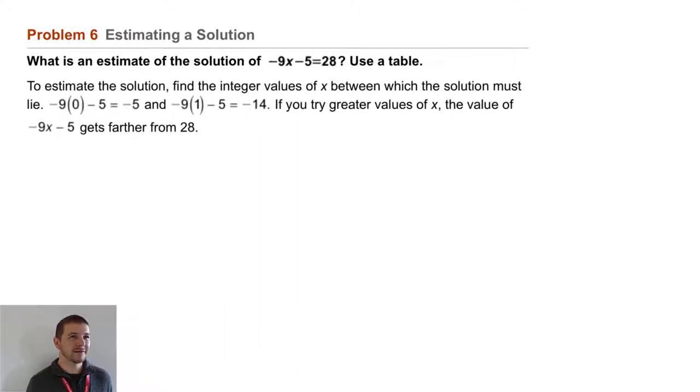To estimate the solution, find the integer values of x between which the solution must lie. -9(0) - 5 = -5. And -9(1) - 5 = -14.